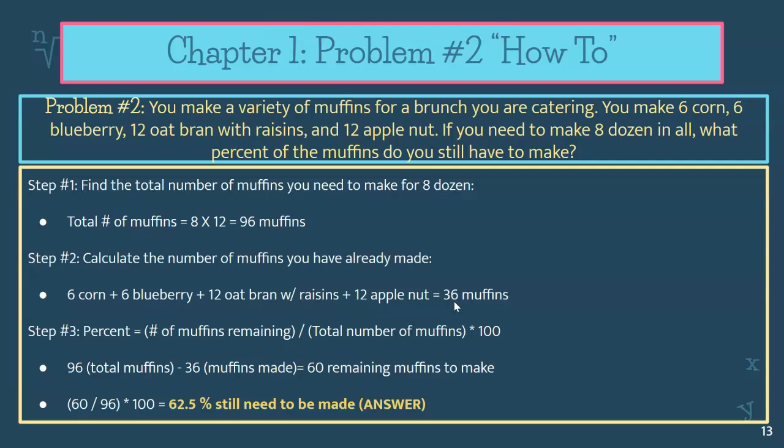Now you're going to calculate your percent. You're going to take the number of muffins remaining divided by the total number of muffins times 100. So you need 96 muffins minus 36, because that's how many you have made, and it gives you 60 remaining muffins to make. So 60 divided by 96 times 100 — you still need to make 62.5% of the muffins. You're not going to round up; you're going to leave it as a decimal.